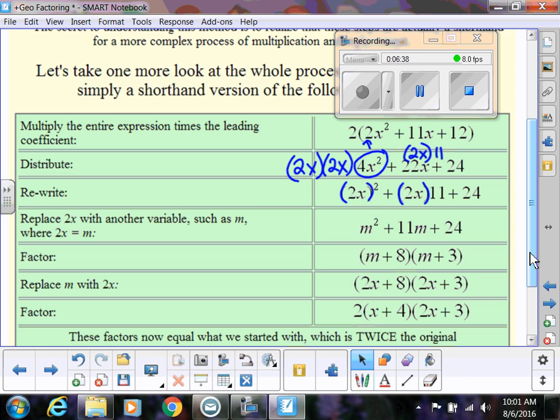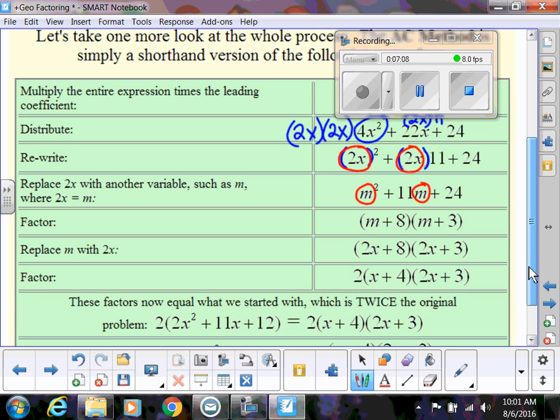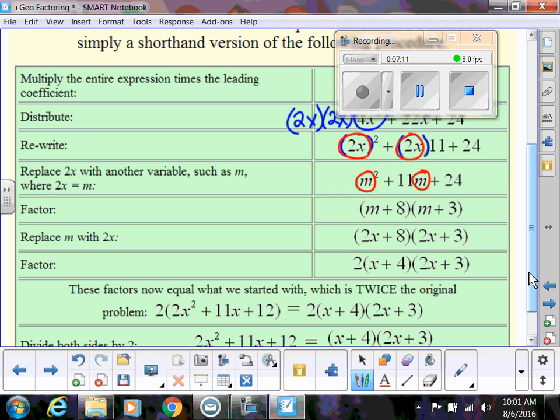Now here's what we're going to do, called using a variable substitution: taking something more complex and replacing it with just a single variable. Instead of writing it with these parentheses and 2x, we're just going to replace that with m. So instead of having 2x here and 2x here, we're replacing them with m's: m² + 11m + 24. Then we're factoring. We still have m's because that's our variable. Then we replace those m's with the 2x's that we know we said was equal to m.